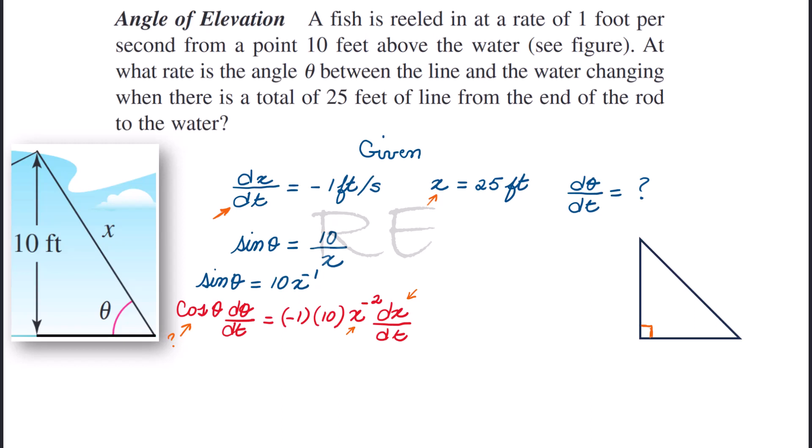We go back to the geometric model. We have a height of 10 feet. We also have a line of 25, which is the hypotenuse. So we are looking for the base.